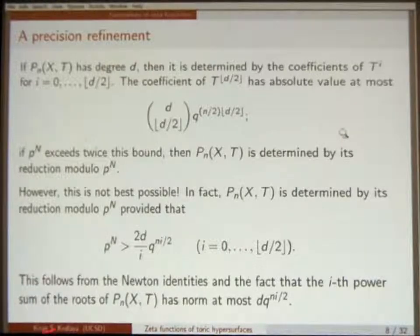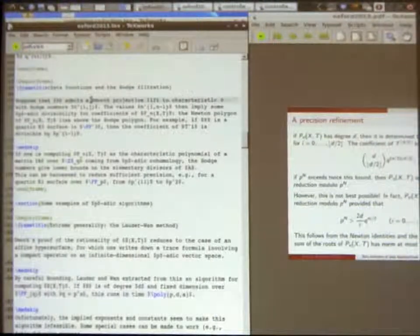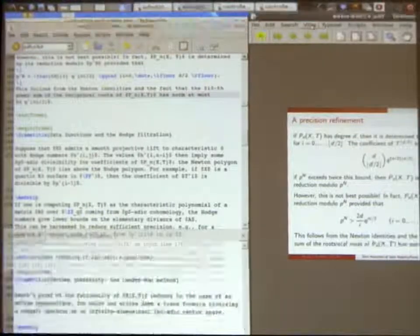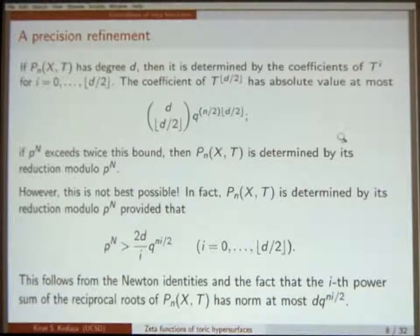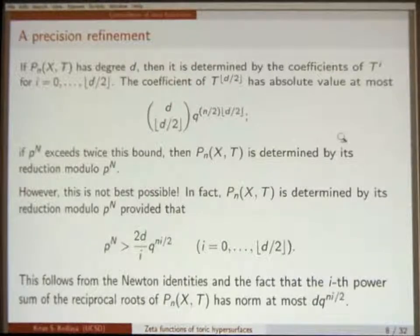The i-th power sum of the reciprocal roots has norm at most d·Q^(i·n/2). When you run Newton's identities to solve for elementary symmetric functions in terms of power sums, you do a division by d, which is why you get a factor of d — but otherwise it would be enough to know that p^n is bigger than 2d/i times Q^n. This is a lot smaller than two times the binomial coefficient, so when p is not super large compared to the other parameters, this is a noticeable improvement.